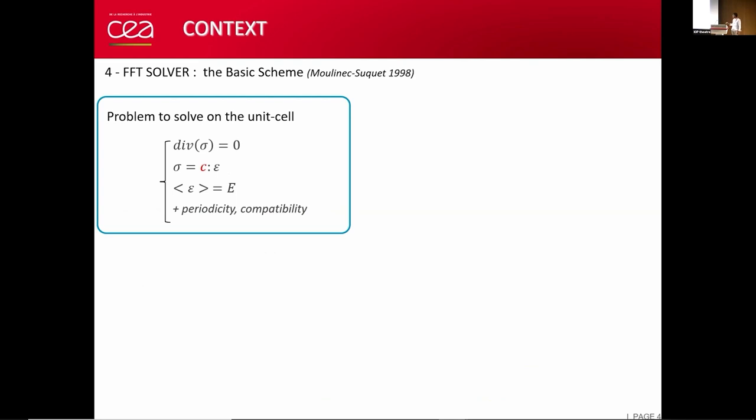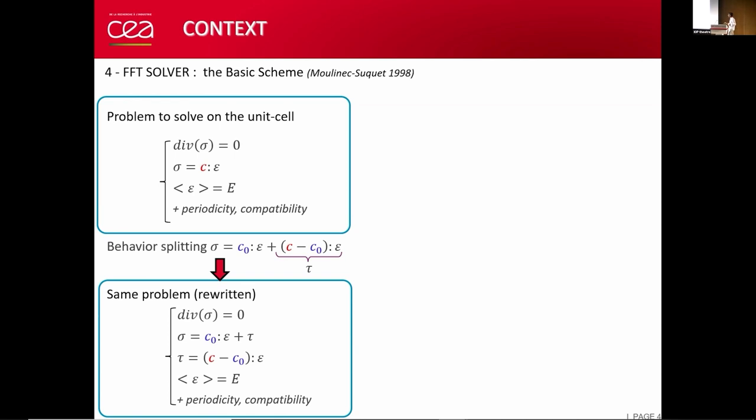The problem we have to solve in mechanics is the following: first is the equilibrium, then the behavior law where C is the stiffness tensor, heterogeneous on the unit cell. You apply an average strain to the unit cell, then add periodic condition and compatibility. The idea is that we will split the behavior into a homogeneous behavior C0 and a polarization tau equal to C minus C0 times epsilon.